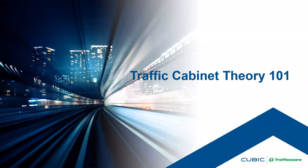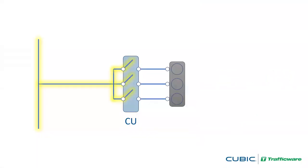Before going further, I want to go on a brief tangent covering fundamental operation of a traffic cabinet — information I wish someone had explained to me 20 years ago. It's important to be familiar with the fundamental components before learning about the latest and greatest, and this information applies to all cabinet architectures, both legacy and ATC. I'm going to use simplified one-line schematic diagrams showing how power to the signals is routed, distributed, and controlled.